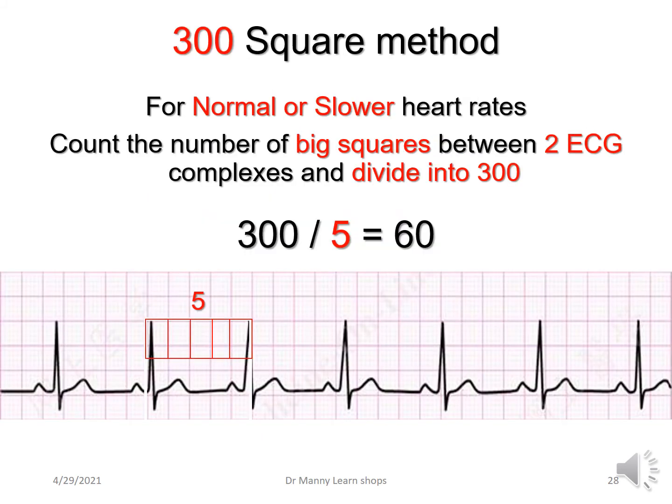This is the 300-square method, for normal or slower heart rates. You count the number of big squares between two cardiac cycles or ECG complexes and divide into 300, because there are 300 large squares in a one-minute rhythm strip. Counting 1, 2, 3, 4, 5 — 5 into 300 is 60 — so the heart rate is approximately 60 beats per minute.